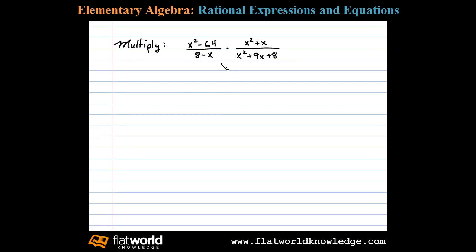Here we're asked to multiply two rational expressions. We begin by factoring the numerator and denominator of both. In the first rational expression we have difference of squares in the numerator that factors x plus 8 times x minus 8.